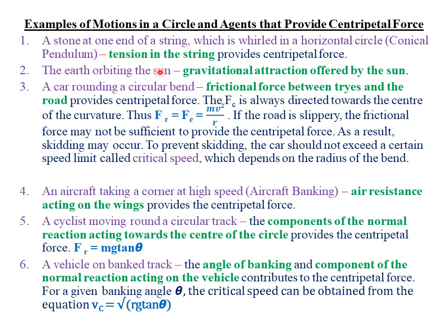The second case is when the Earth is orbiting the Sun — that is, when the Earth or any other planet, for example Jupiter, Saturn, Mars, or Mercury, is rotating around the Sun. The agent that provides the centripetal force, keeping that planet rotating in a circular path, is simply the gravitational attraction offered by the Sun.